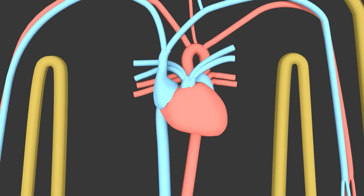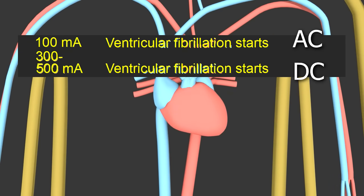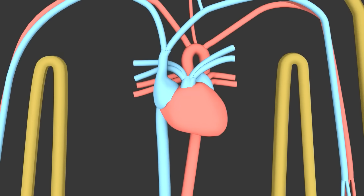The heart's pumping is controlled by electrical stimulation. At 100 milliamps AC, or 300 to 500 milliamps DC, if the current runs through the heart, then that is interfered with. This causes what's called ventricular fibrillation. The heart quivers instead of beating properly, and also leads to death.